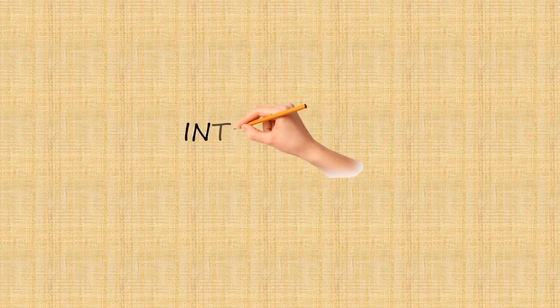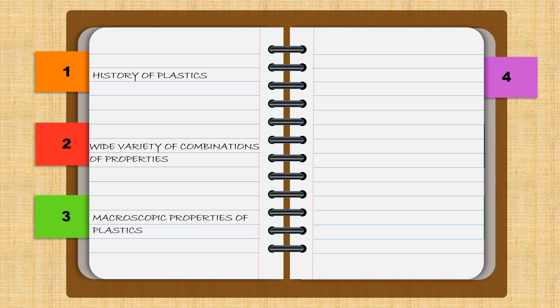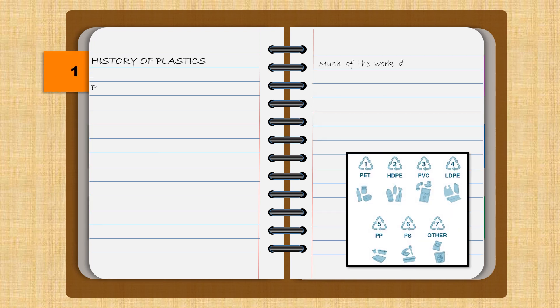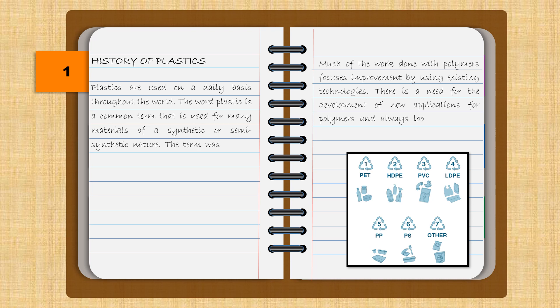Let's get to know a little about plastics. It is very essential to know what plastic is — whether it is an organic or inorganic chemical, how it comes into existence, and how we started using it. Plastics are used on a daily basis throughout the world. The word plastic is a common term used for many materials of a synthetic or semi-synthetic nature. The term was derived from the Greek 'plastikos,' which means fit for molding.